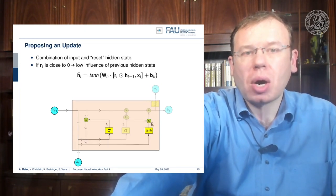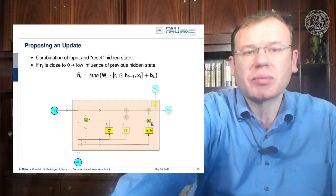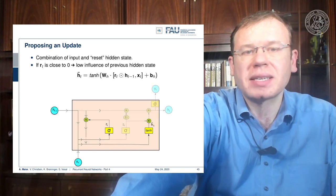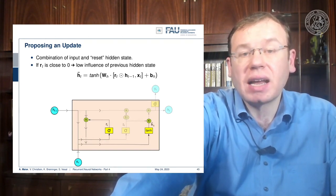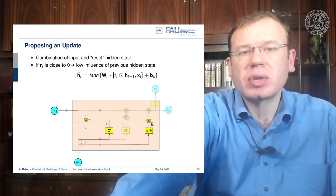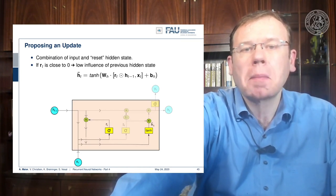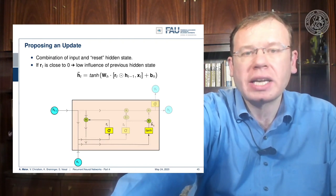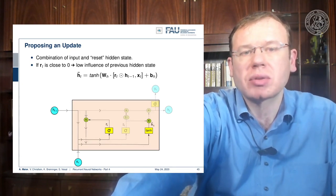Next we propose the update by combining the input and the reset state. The update proposal h_tilde is produced by tanh, where we take the reset gate r_t times the last hidden state — essentially removing entries we don't want to see from the last hidden state — and concatenate x_t, multiply with matrix W_h, and add bias b_h. This is fed to tanh to produce the update proposal.